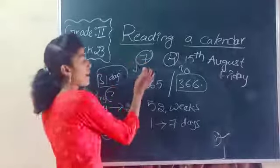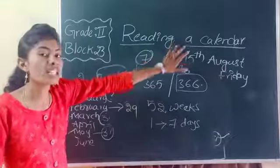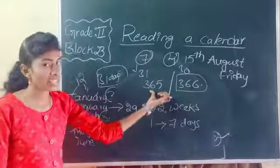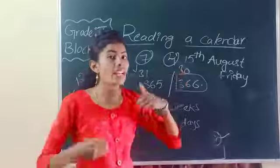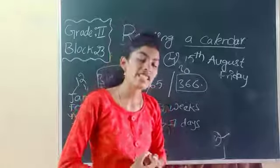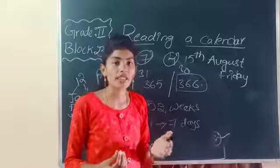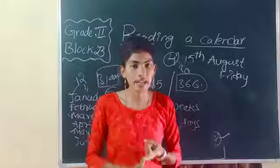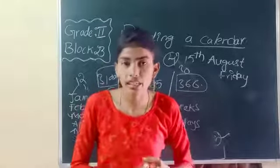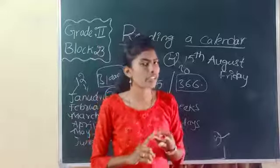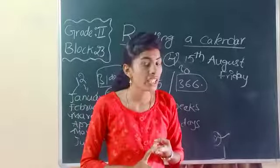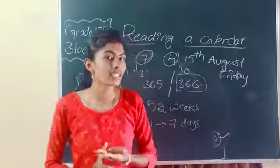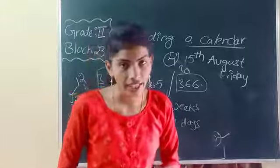How many months have 31 days? 7 months. How many months have 30 days? 4 months. How many days in a year? 365 or 366 days. And when is your birthday children? You can also name some constant festivals: Independence Day on August 15th, Republic Day on January 26th, Teachers Day on September 5th, and Children's Day on November 14th.